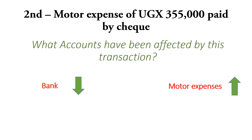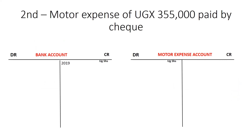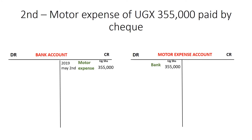The double entry for that would be that we credit the bank account — bank being an asset, and assets are credited upon reduction. So we credit the bank account with 355,000. The other account affected is the motor expense account, and all this took place on the 2nd. We complete our double entry in the motor expense account by debiting the motor expense account by 355,000. The other account affected is bank, and this happened on the 2nd of May.